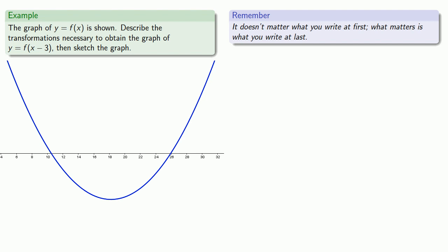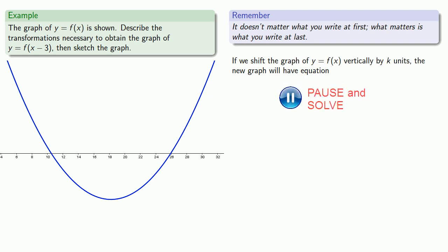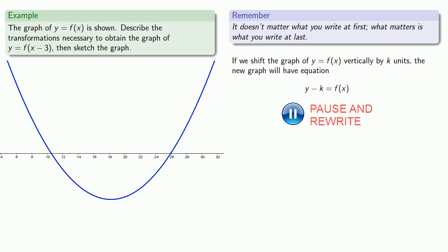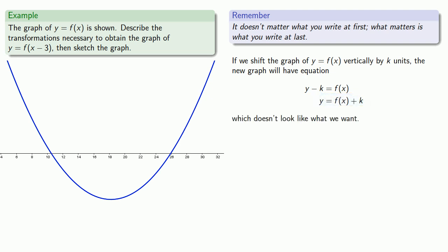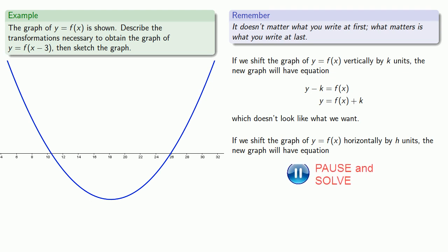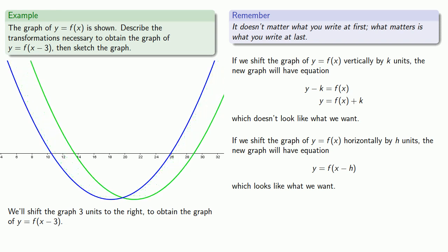Let's shift the graph vertically. If we shift the graph of y equals f of x vertically by k units, the new graph will have equation — and since we start with an equation y equals something, we should end with an equation y equals something. We want the graph of y equals f of x minus three, and that doesn't look like this, so a vertical shift is not what we want. If a vertical shift didn't work, how about a horizontal shift? If we shift the graph y equals f of x horizontally by h units, the new graph will have equation — and that looks exactly like what we want. So we'll shift the graph three units to the right to obtain the graph of y equals f of x minus three.